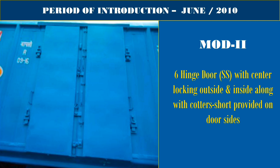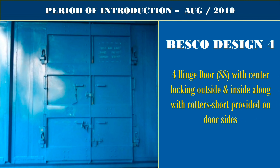This image is of the Besko Design — a 4-hinge door of stainless steel with center locking both outside and inside, along with a cotter short provided on door sides. Its period of introduction is June 2010.